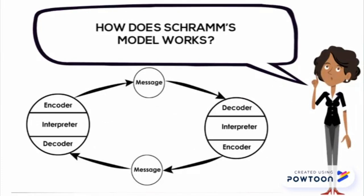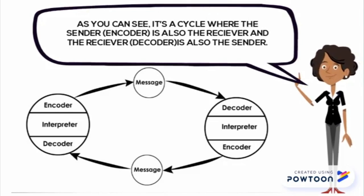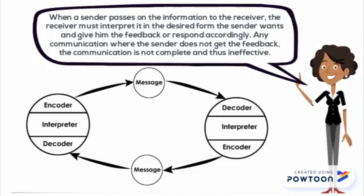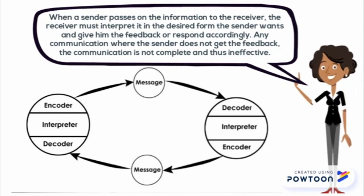How does Schramm's model work? As you can see, it's a cycle where the sender is also the receiver, and the receiver is also the sender. When a sender passes on the information to the receiver, the receiver must interpret it in the desired form the sender wants and give feedback or respond accordingly. Any communication where the sender does not get feedback is not complete and thus ineffective.